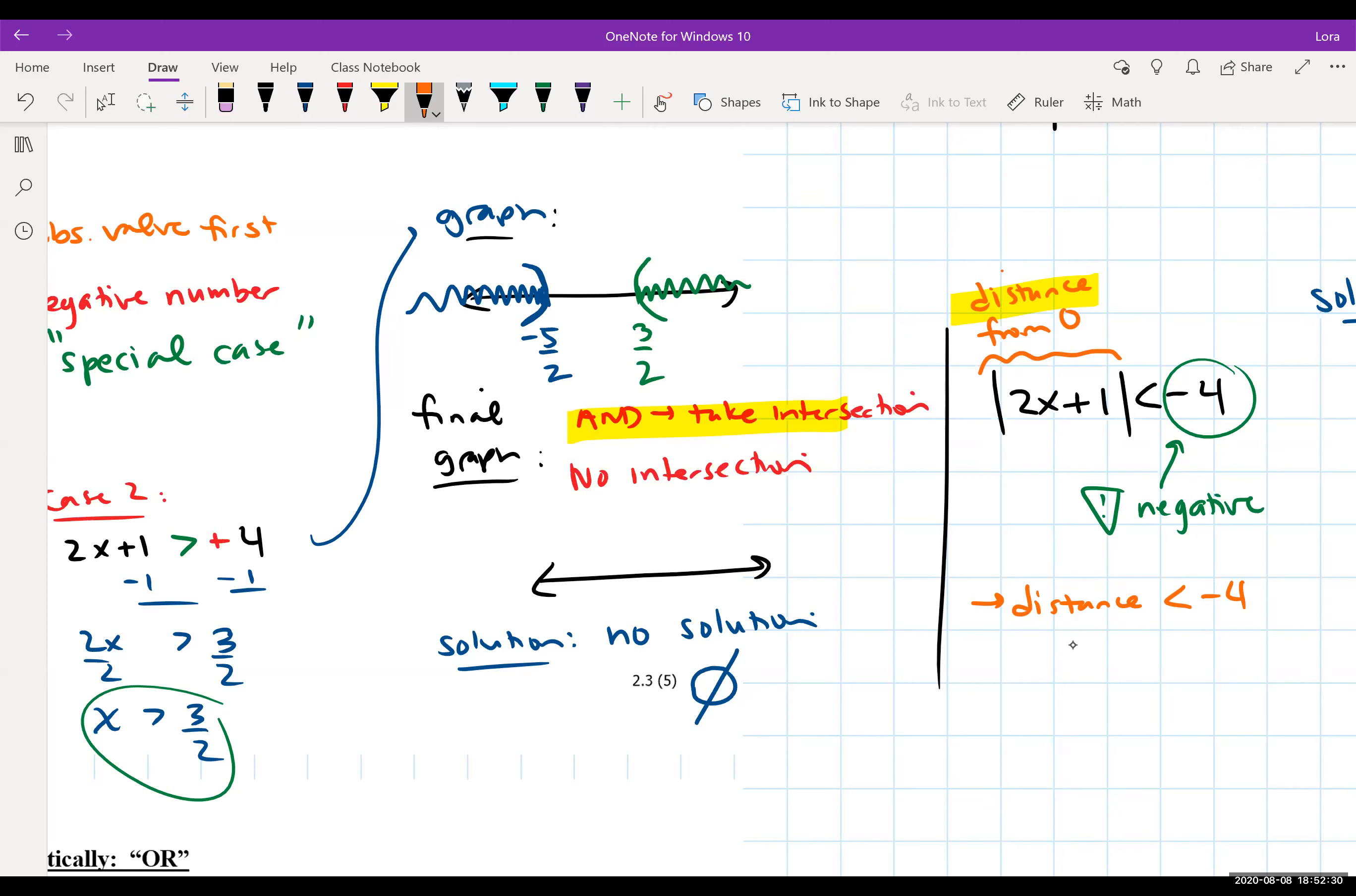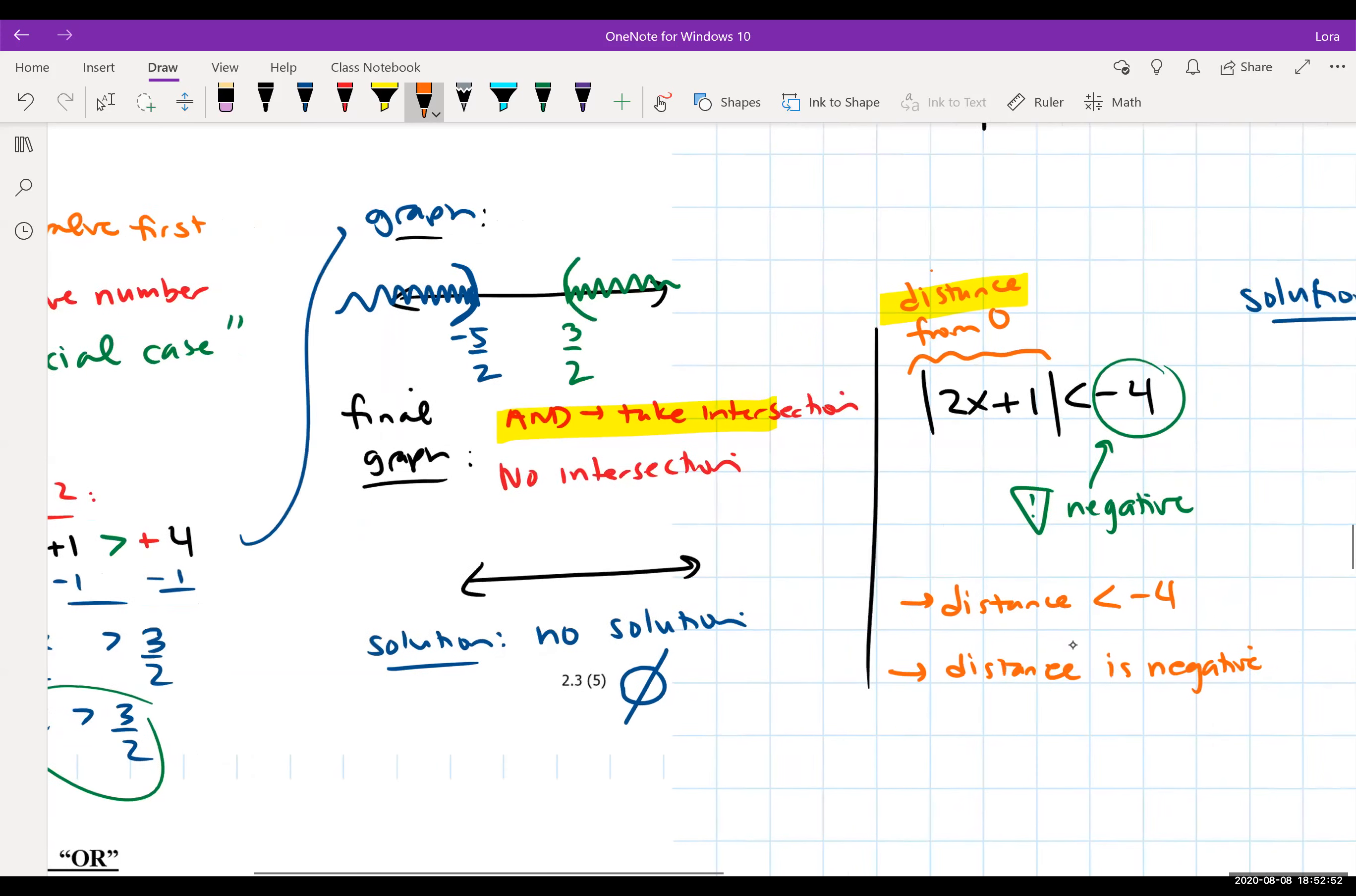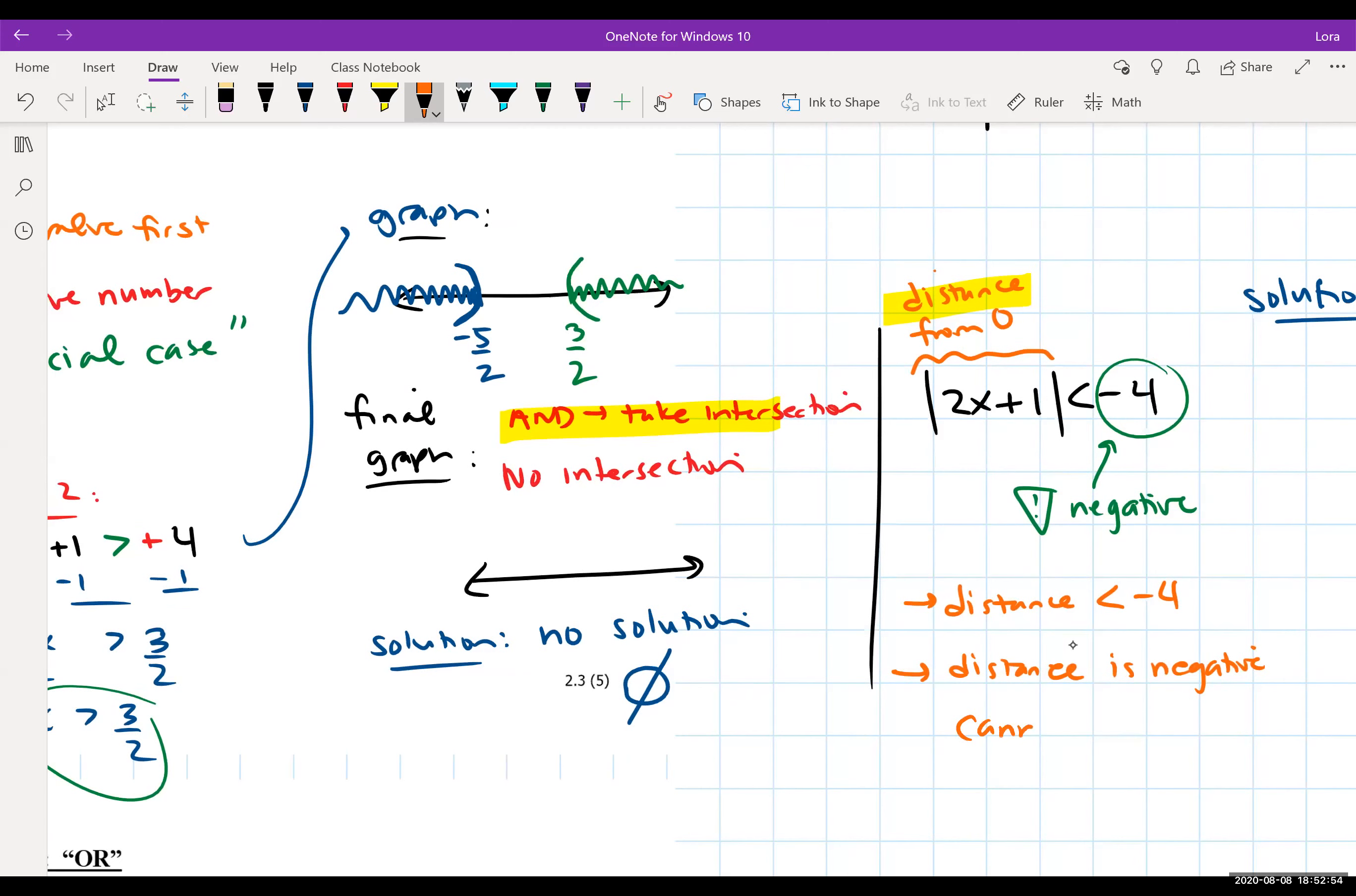So if you're negative four on the number line, you're on this side somewhere, negative five, negative 10, negative 20. Distance is less than negative four is you saying that distance is negative. And that is not a true statement. That's not feasible in real life. So this cannot happen. And so that's kind of the shortcut, the thought process around why there is no solution.